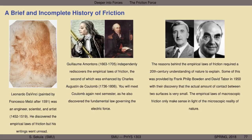Some of the insights were provided by Frank Philip Bowden, pictured on the left, and David Tabor, pictured on the right. Their work was done in 1950, and they discovered that the actual amount of contact—as opposed to the apparent amount of contact you can see with your eyes between two surfaces—is in fact likely very small. That is why one of the laws appears to be independent of the apparent area of contact for two surfaces. The empirical laws of macroscopic friction really only make sense in light of the microscopic reality of nature, which simply couldn't be probed until the end of the 1800s and the beginning of the 1900s.